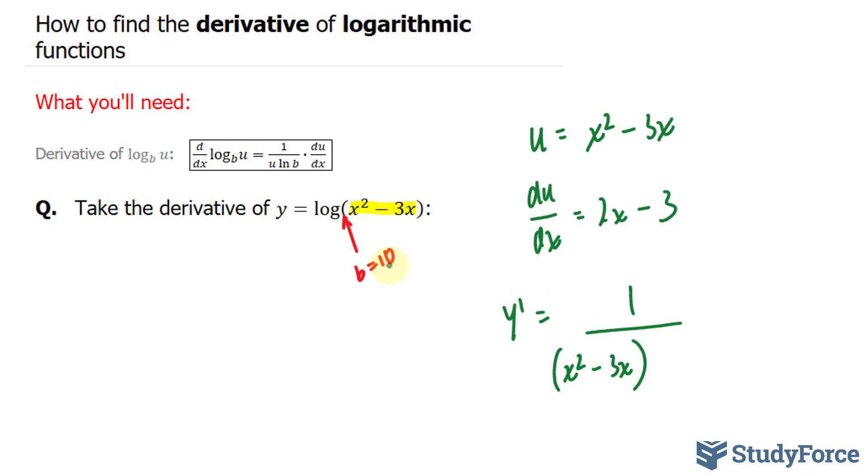Now, as I mentioned, our b value is 10. So I'll write down ln 10 times 2x minus 3.